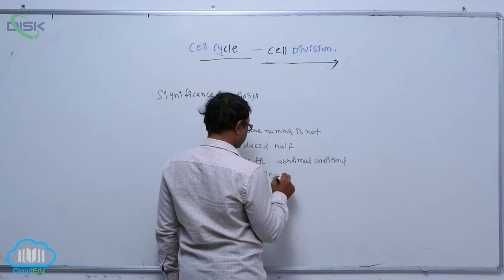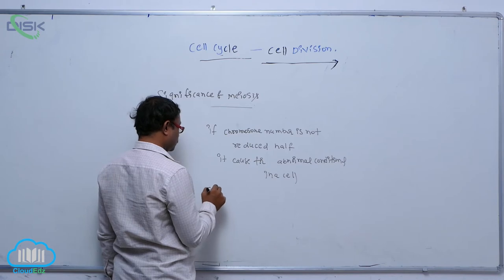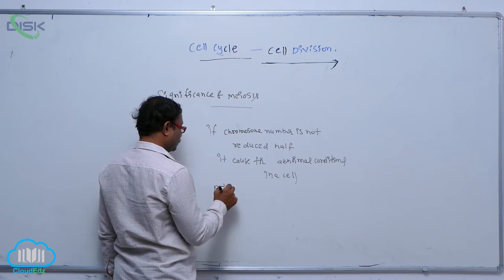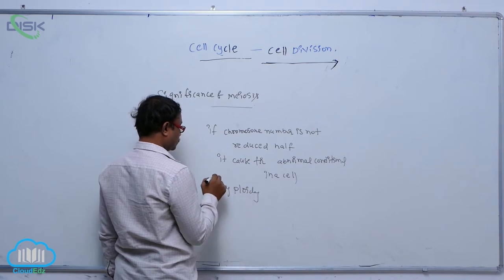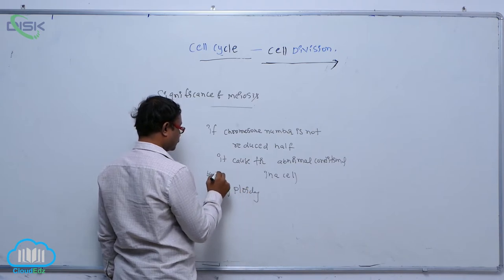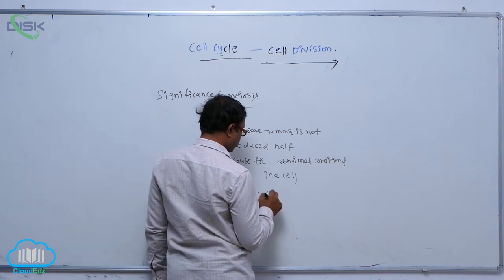In a cell, so it is caused for that polyploidy condition. By the result, polyploidy condition occurs.